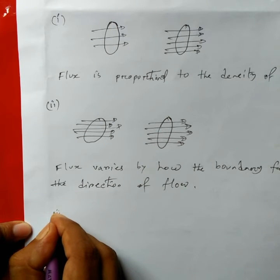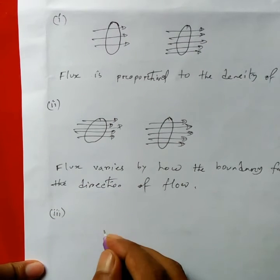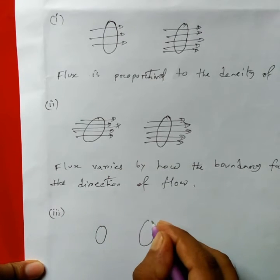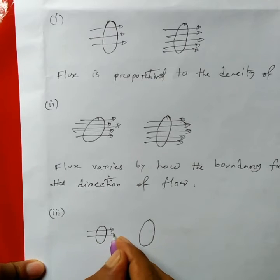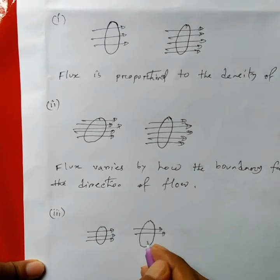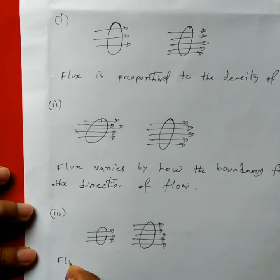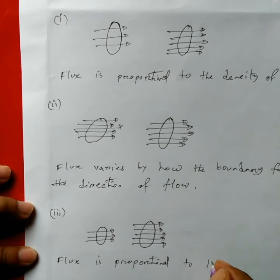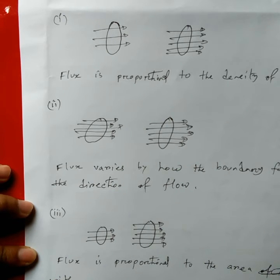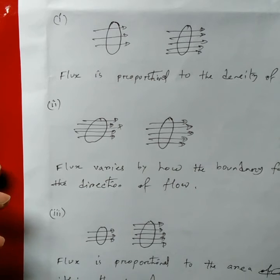Number 3 is the surface area. So the surface area is the same, the direction of the flow is the same. Flux depends on the surface area — the angle of the boundary determines the flux of the occurrence through that surface.